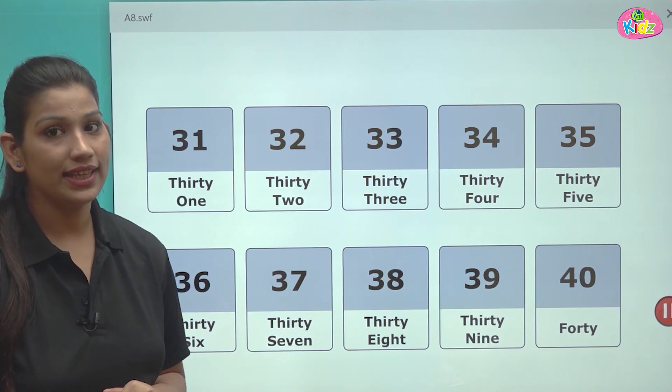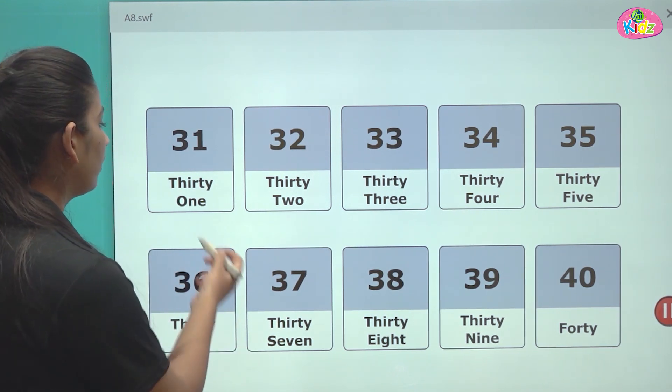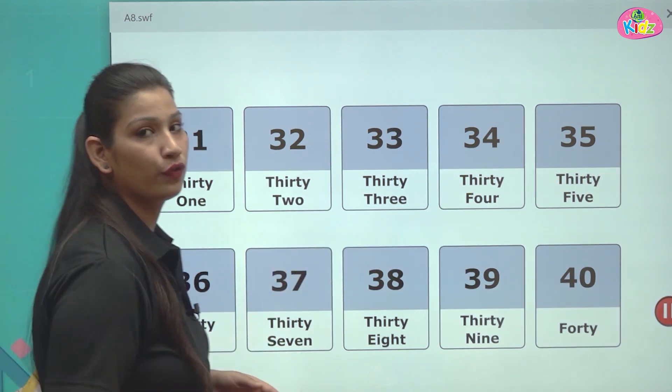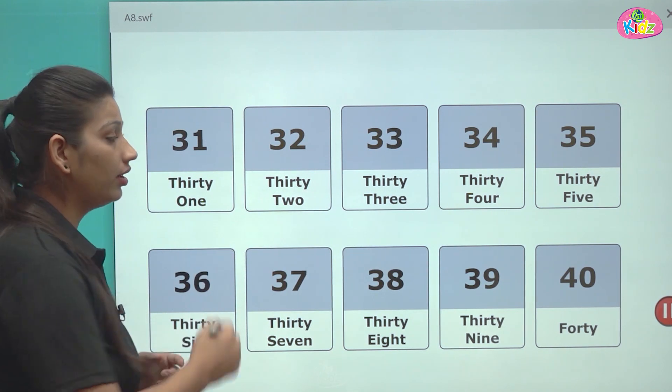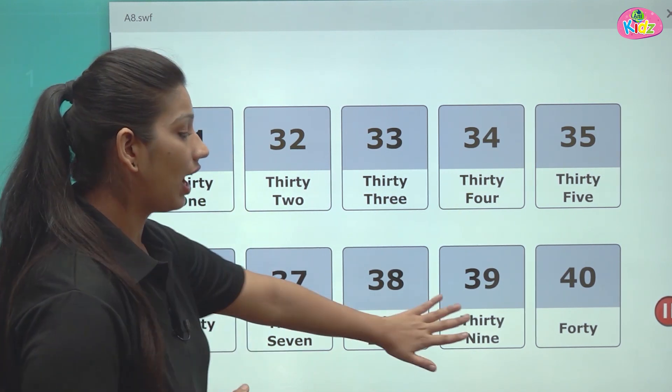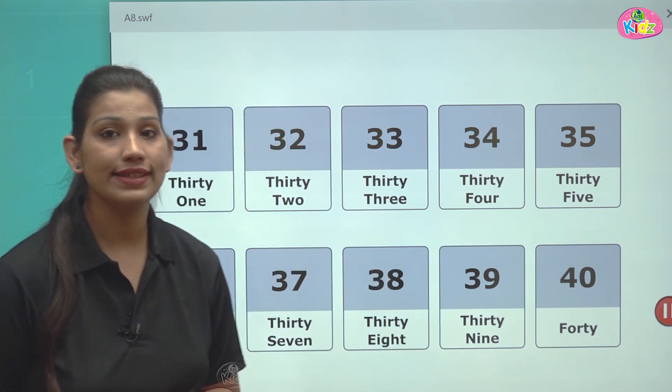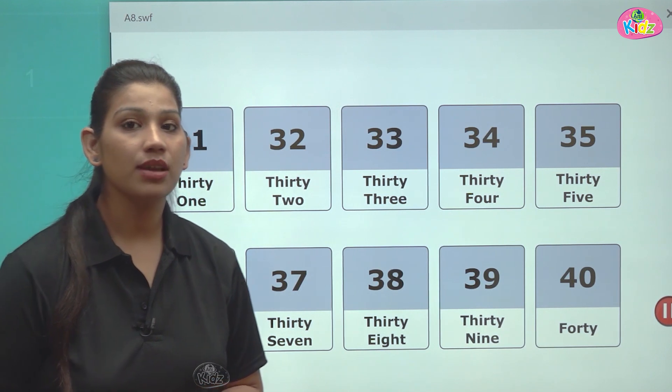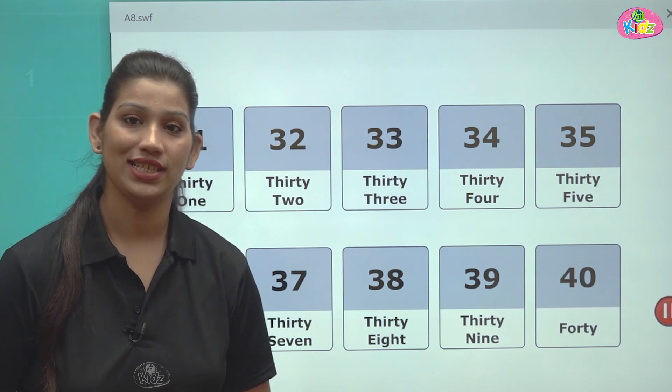30 ki spelling aap sabko pata hai, T-H-I-R, 30, uske saath jab aap 1, 2, 3, 4, 5 ki number names likh denge, so that becomes the two digit number, 31, 32, 33 and so on. After 39, there comes number 40. 40 ko hum likhte hain, F-O-R-T-Y.